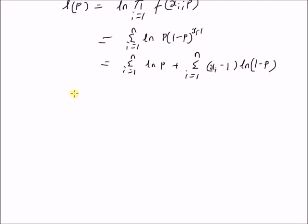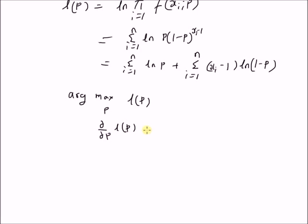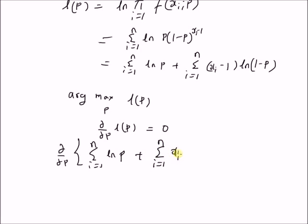In order to find an estimate of p, we use the maximum likelihood criterion — that is, we find the value of p at which the log-likelihood function is maximized, written as argmax_p of L(p). This is determined by equating the derivative with respect to p to zero: the derivative of the summation of log(p) from i=1 to n, plus the summation of (x_i minus 1) times log(1 minus p), equals zero.